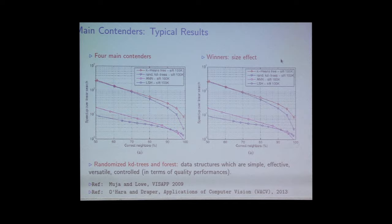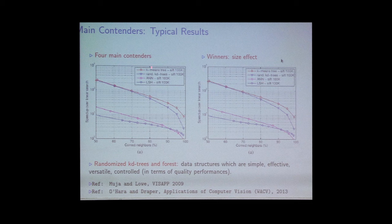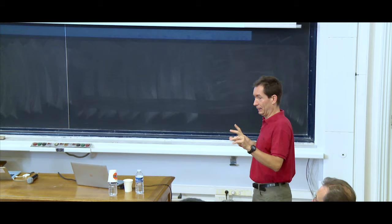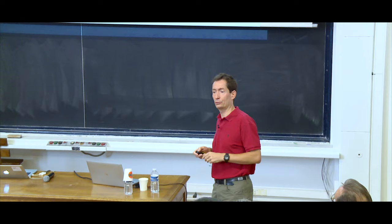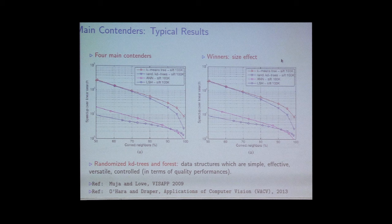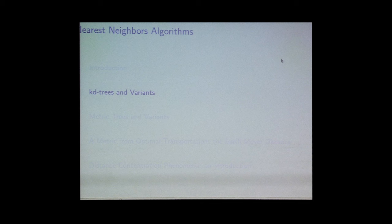These solutions have been analyzed carefully — both spatial requirements and query complexity are under control. This motivates focusing on KD trees for data in Euclidean space.